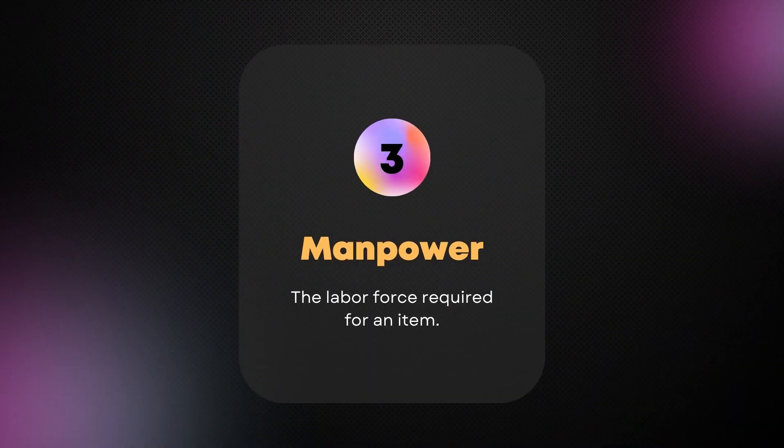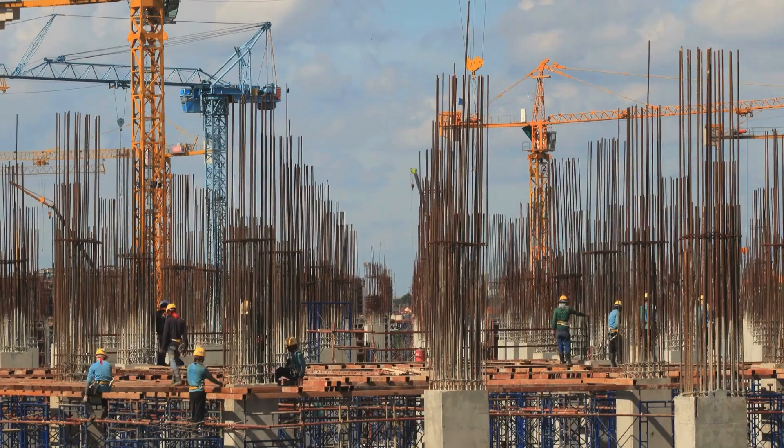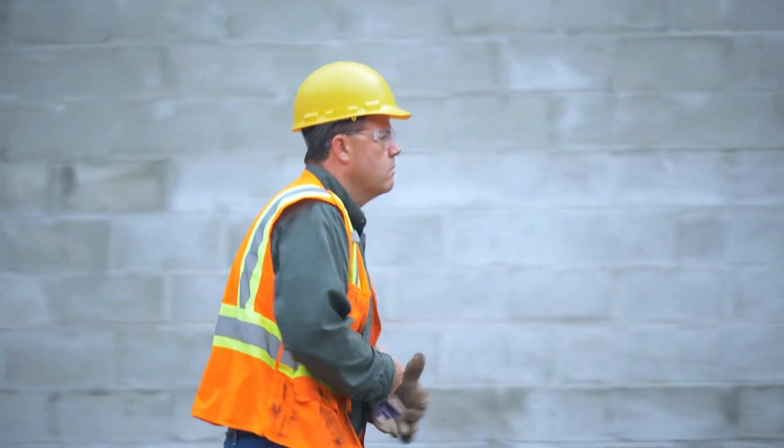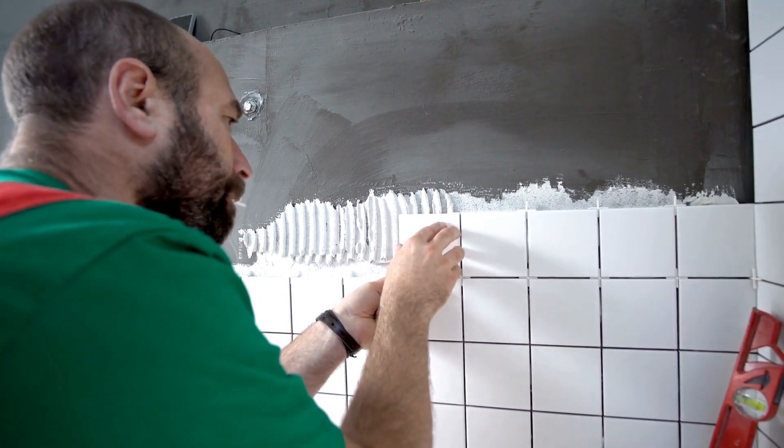The third cost element is manpower or labor. After you have your materials and equipment, you need the laborers who will actually do the installation or fixing. For structure works you need carpenters, steel fixers, and unskilled laborers. For block walls you need block masons and unskilled laborers. For tiles you need a tile mason and unskilled laborers. Unskilled labor will always be needed to assist the skilled labor, regardless of the trade.